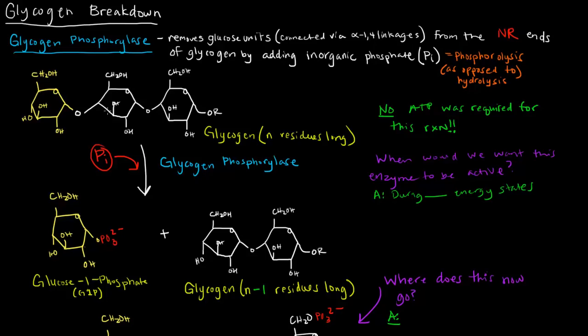So how does this work? We start off with a glycogen chain that's n residues long, where we have this end here being the non-reducing end, and this end over here, assuming this chain goes on further, has a free OH group at the anomeric carbon. This would be the reducing end.